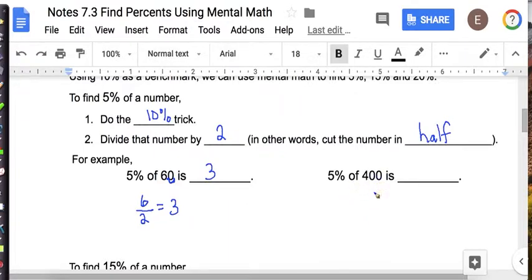Now, 5% of 400, so I'm going to use the 10% trick, move it one to the left. I get 40, because I don't have to write 40.0, and now I'm going to take half, so half of 40 is 20.